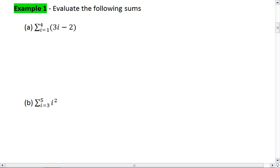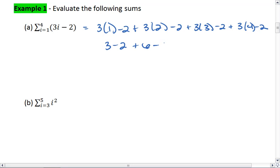For this first one, we're starting with i equals 1, and we're summing all the way up to i equals 4. So we do 3 times 1 minus 2, plus 3 times 2 minus 2, plus 3 times 3 minus 2, plus 3 times 4 minus 2. This gives us 3 minus 2, plus 6 minus 2, plus 9 minus 2, plus 12 minus 2.